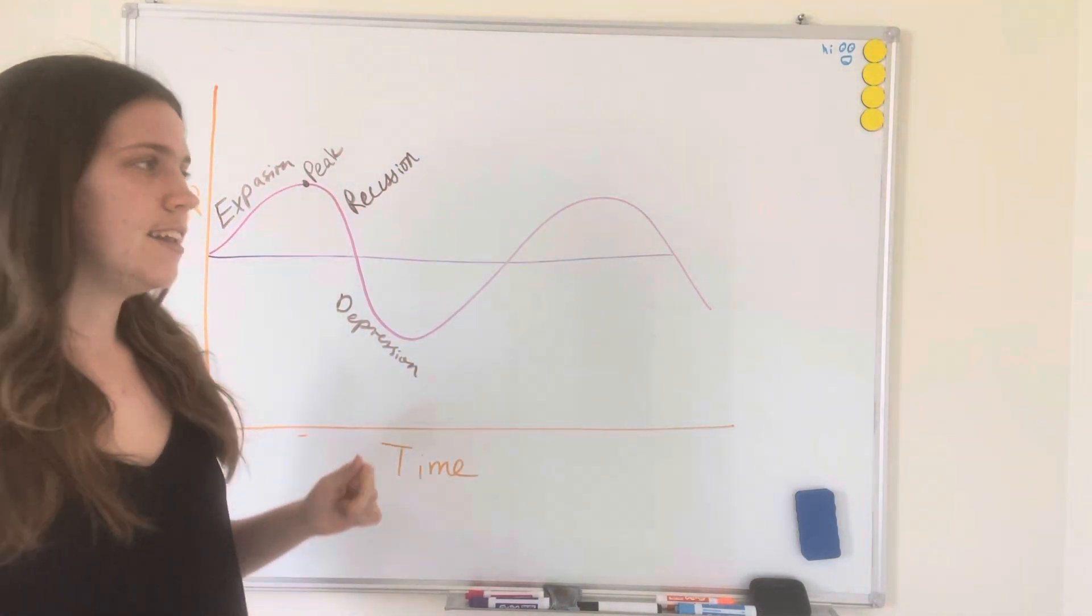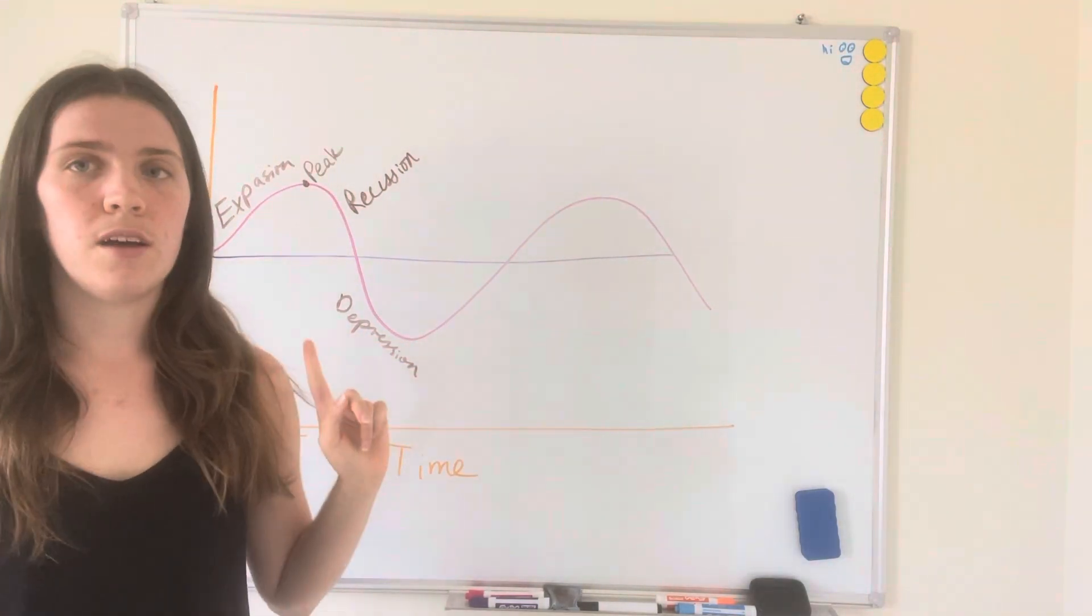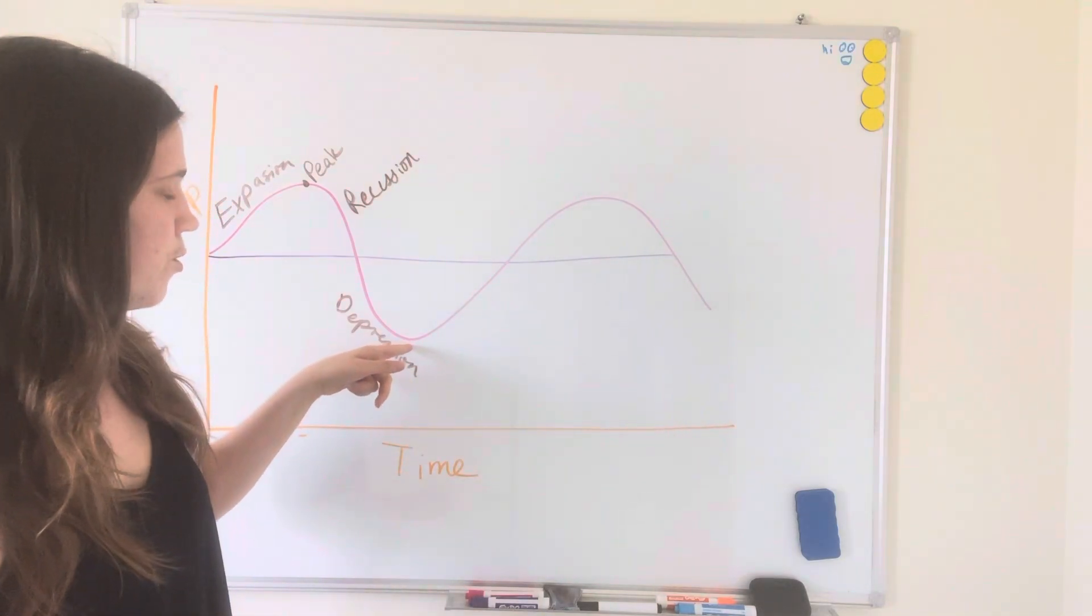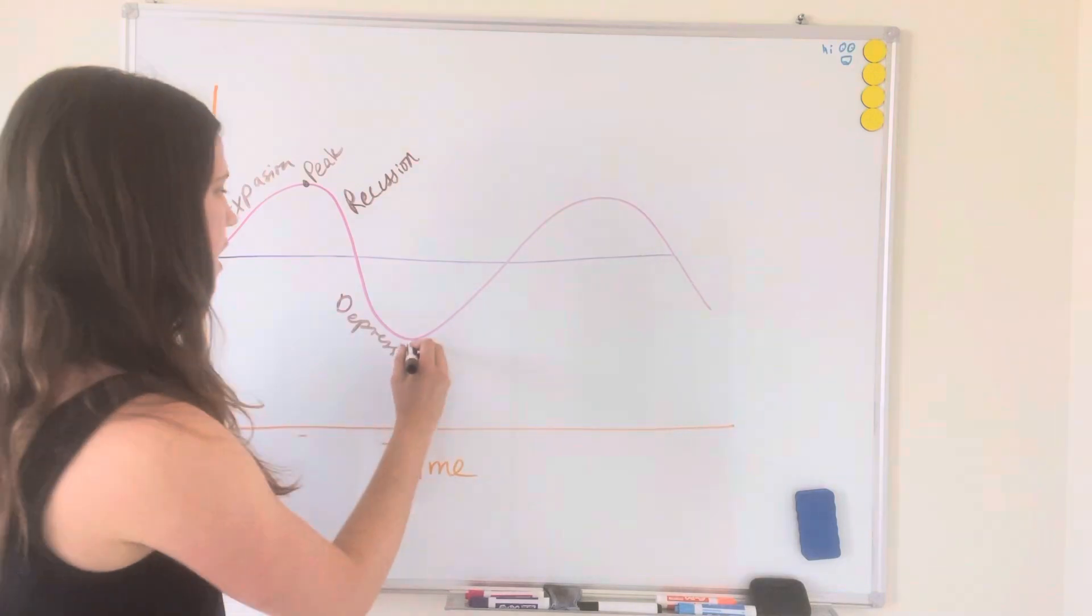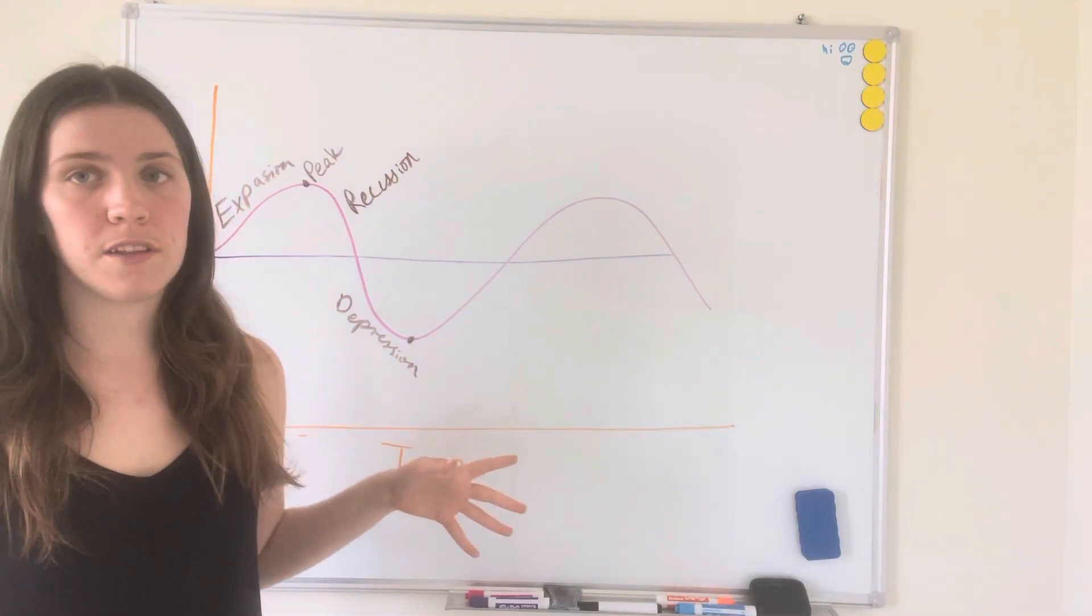All right, now you see at the bottom our graph goes to another point and then goes back up. This is called a trough, and this is the lowest point of the depression.